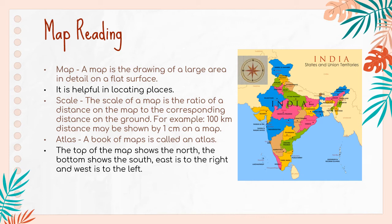An atlas is a book of maps. The top of the map shows the north, the bottom shows the south, east is to the right, and west is to the left.